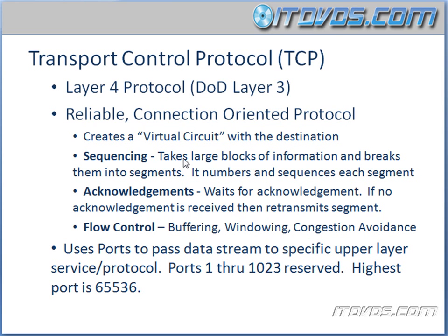Sequencing is where TCP takes large blocks of information, breaks them into segments, and then numbers and sequences each segment so that they can be reassembled at the destination in the proper order. Because with IP, it's not guaranteed that packets are going to be received in the same order, so TCP handles this by numbering and sequencing the segments.